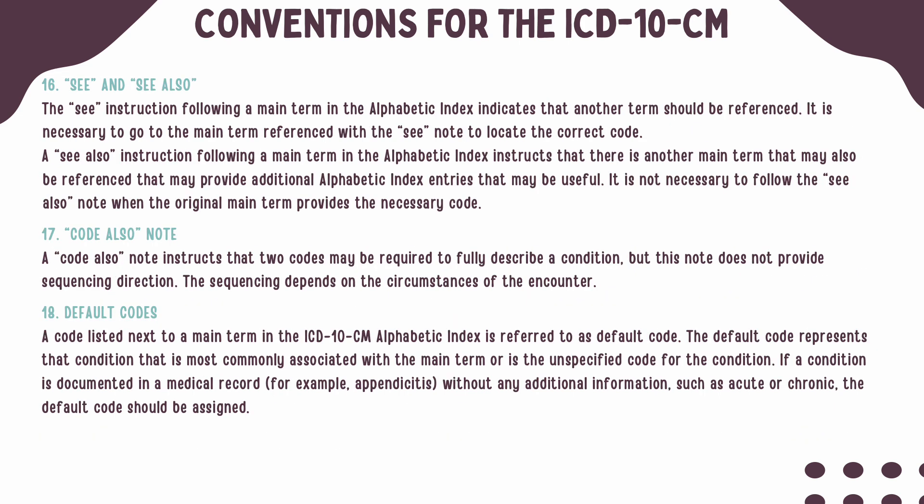When the term 'See' is in the alphabetic index, it indicates that another term should be referenced instead of the main term it is listed with. When the phrase 'See also' is found in the alphabetic index, it means there is another term that may be useful to reference if the main term does not provide the appropriate code.